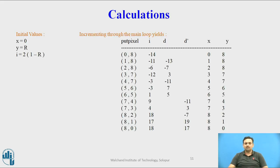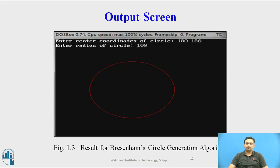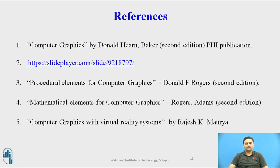By putting these values — where 8 is the Y value (the radius) — some calculations are made, and the values of delta, delta bar, and XY coordinates are shown here. Considering the radius as 8, these values are the output of the algorithm. This is the output screen generated after execution of the Bresenham's circle algorithm. These are some references used to make this video. Thank you.